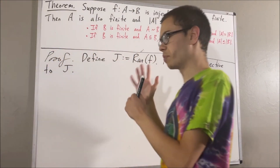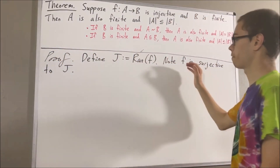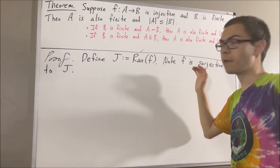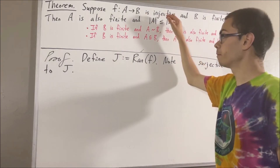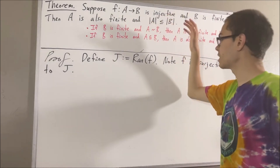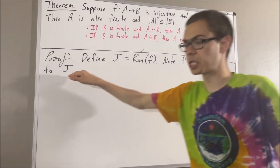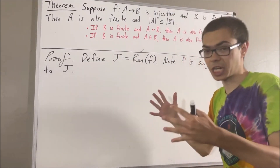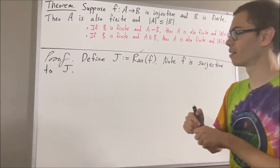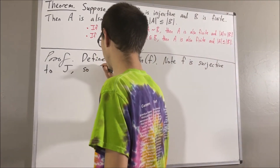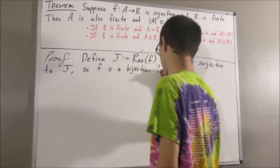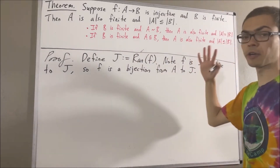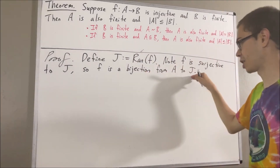And what this means is, if we think of F as a function from A to J, then F is injective and F is surjective to J. And that tells us that F is a bijection from A to J. So there exists a bijection from A to J.